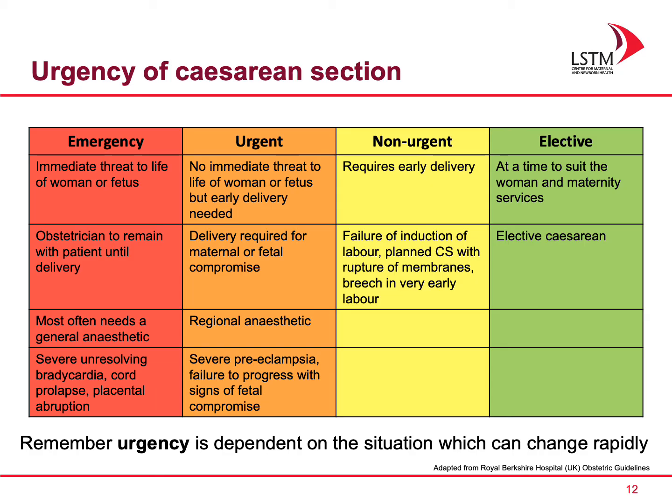An urgent caesarean section is one where there is no immediate threat to the life of the woman or fetus, but early delivery is needed. This is usually where there is delivery required for maternal or fetal compromise. It can be performed under a regional anaesthetic. Examples of such cases are where there is severe preeclampsia, or failure to progress with signs of fetal compromise.